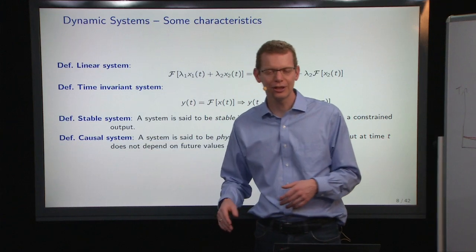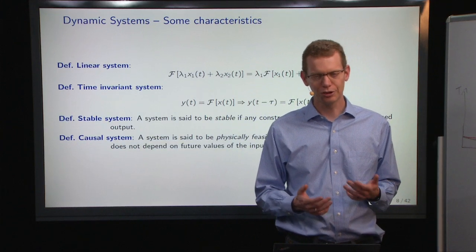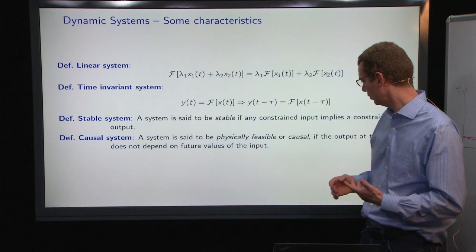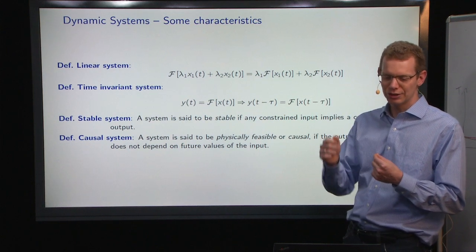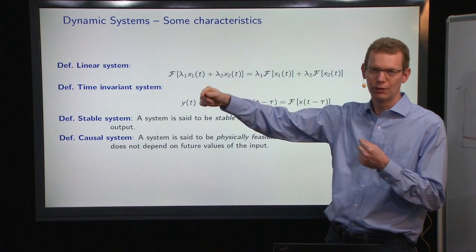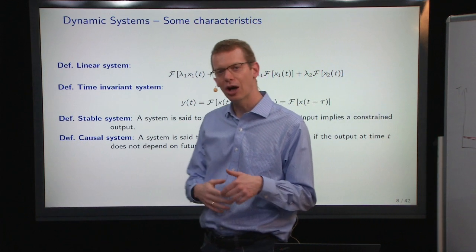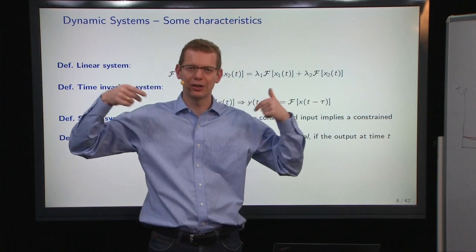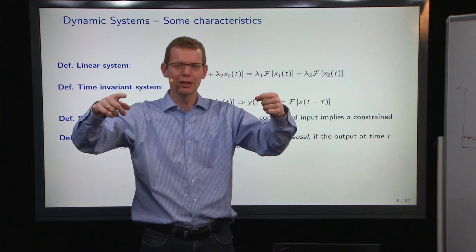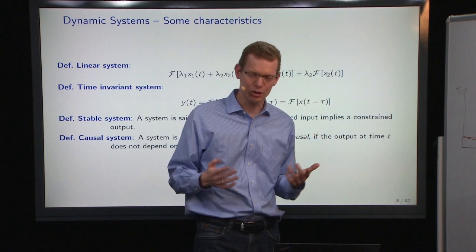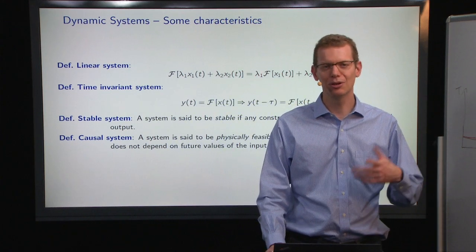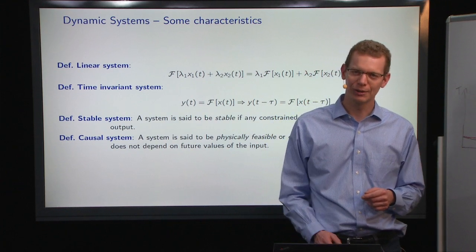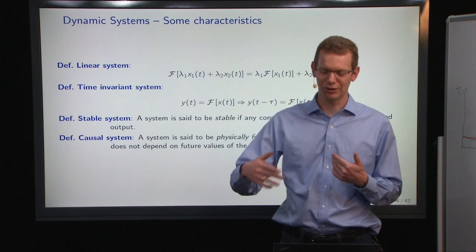Causality is another thing that we typically don't think so much about—we just assume that it's there. If it is causal, then it's physically feasible. So it means that the output does not depend on future values of the input. One place where it would be nice to have that is with noise cancelling headsets. What you can only react to is noise that you hear, but if you knew what noise was coming, then you could cancel the noise much better. But that is not feasible. Sometimes you can predict things, but you will not know exactly what will happen until it did happen.